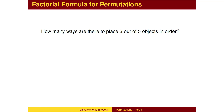Here is the first example again. We will multiply three numbers together, beginning with 5, and going down by 1 each choice.